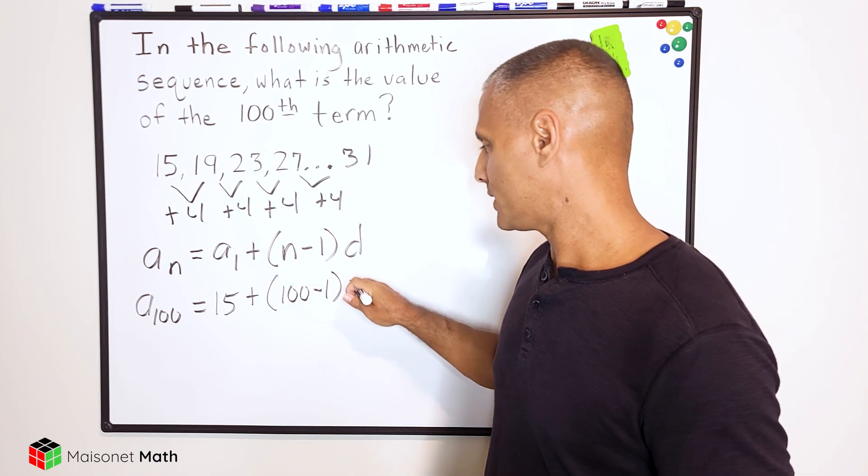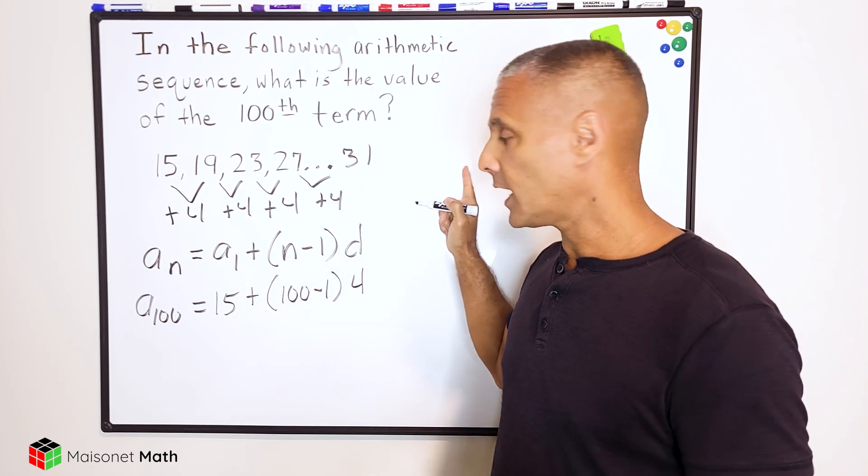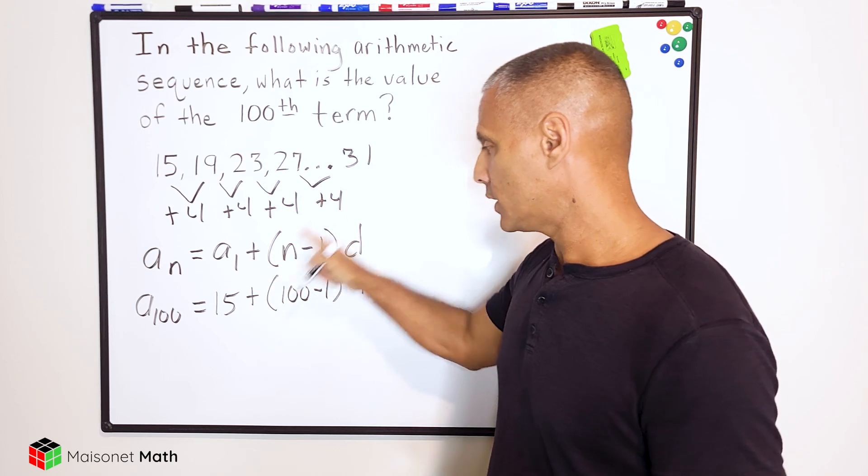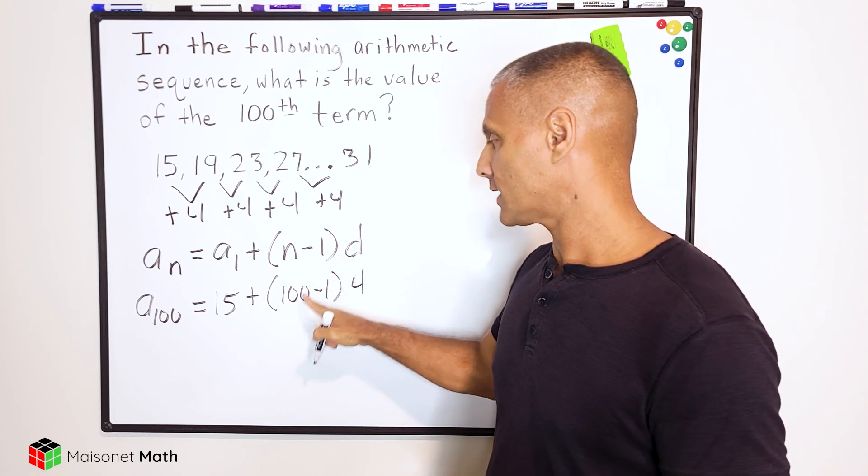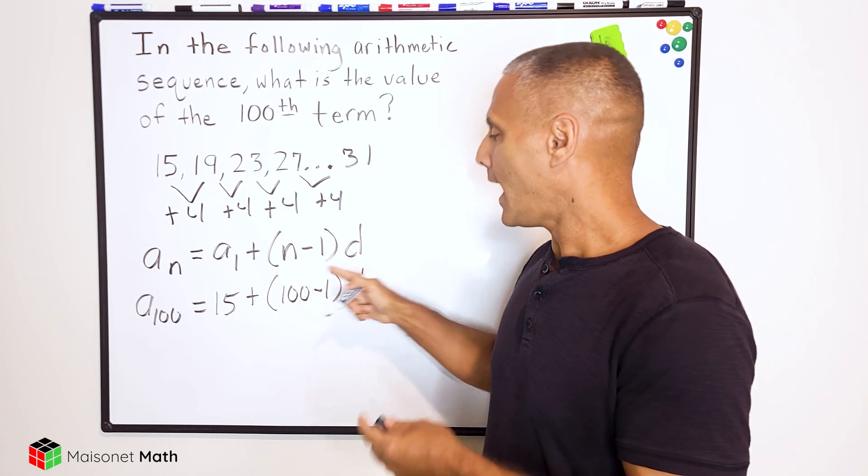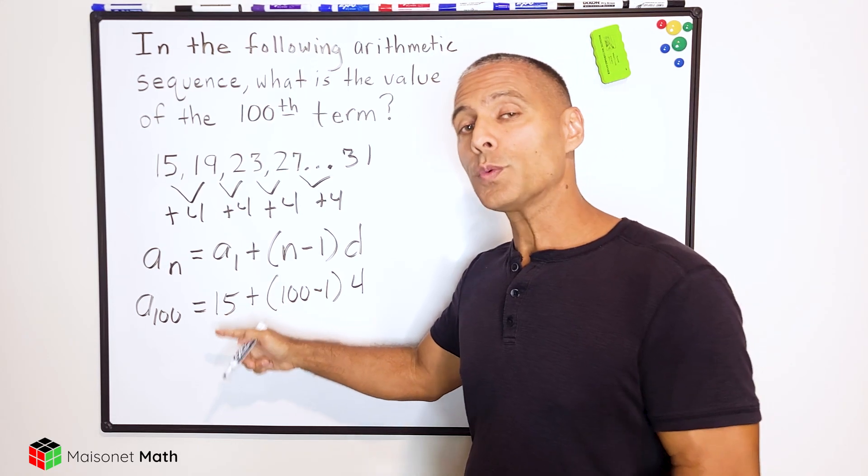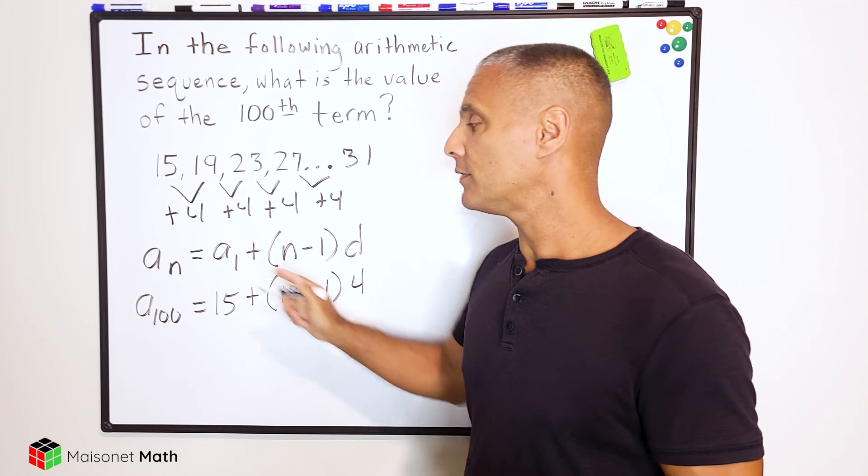And we're going to multiply that by the common difference. So we're going to have this increase of 4 99 times. And that is where this part of the equation comes from, because 99 times 4 just means we have 99 increases of 4. And we're going to add that product to 15, which is our starting point, which will tell us the value of the hundredth term.